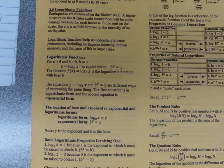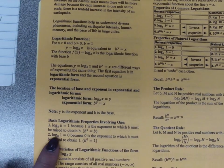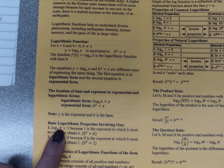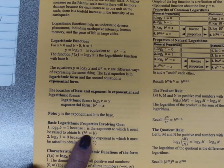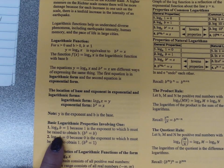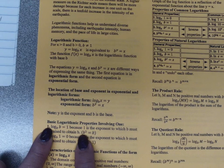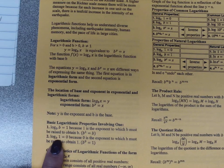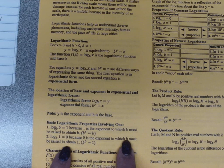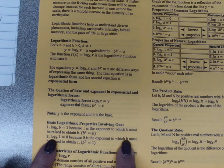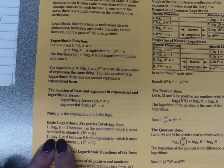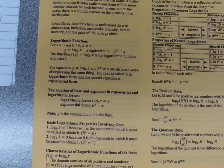The basic logarithmic properties involving 1: log base b of b equals 1, because 1 is the exponent to which b must be raised to obtain b. In exponential form, b to the 1 equals b — anything to the first power is itself. Log base b of 1 equals 0, because 0 is the exponent to which b must be raised to obtain 1. So b to the 0 equals 1, because anything raised to the 0 power is 1.